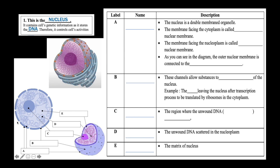Let's have a look at this diagram to learn about the structure of the nucleus. The nucleus is surrounded by a membrane, represented by A, known as the nuclear membrane. There are many perforations or pores on the surface of the nuclear membrane, represented by B, known as nuclear pores. The matrix of the nucleus, represented by E, is known as the nucleoplasm. D refers to the unwound DNA stored in the nucleus, known as chromatin. C refers to a region where chromatin is most concentrated, known as the nucleolus.